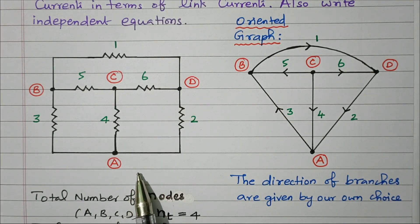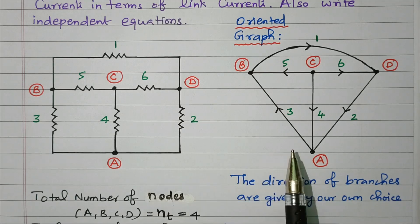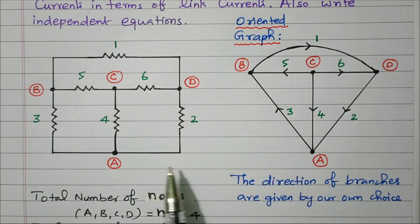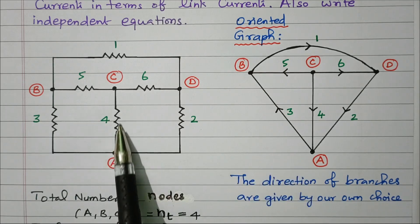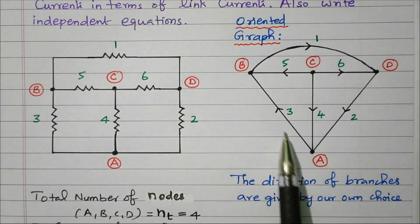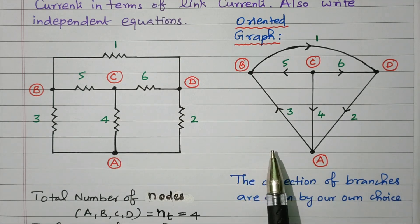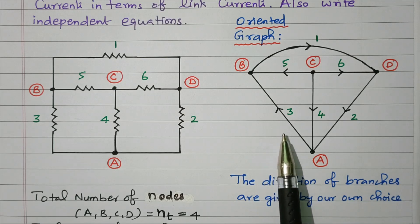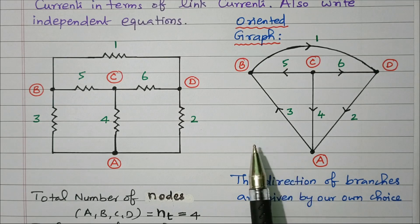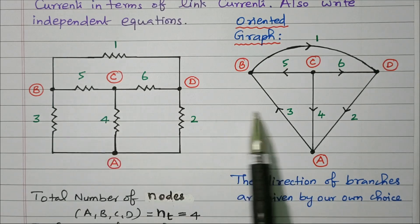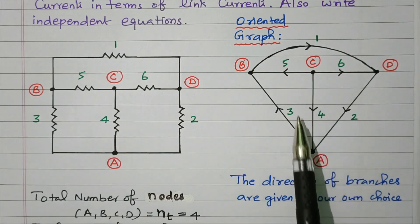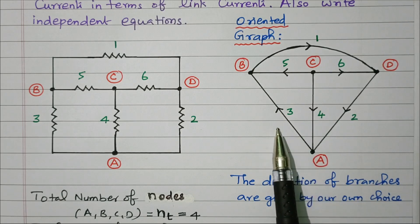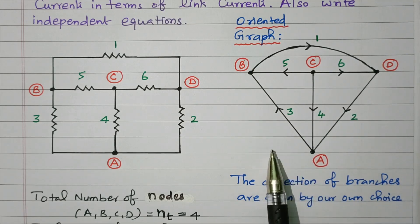Four nodes and six branches are available. The network can be represented by a graph. A graph is nothing but the network elements replaced by straight lines — it is called a graph, so that we can easily understand. If the direction is also given, that is called an oriented graph. This network is drawn as a graph with directions given, so this is an oriented graph.